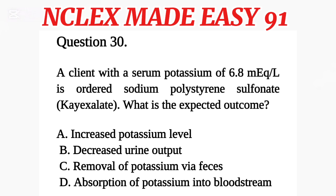Question 30. A client with a serum potassium of 6.8 mEq/L is ordered sodium polystyrene sulfonate. What is the expected outcome? A. Increased potassium level. B. Decreased urine output. C. Removal of potassium via feces. D. Absorption of potassium into bloodstream.